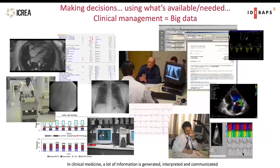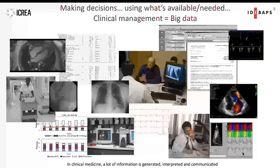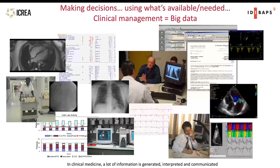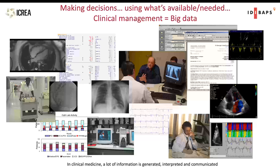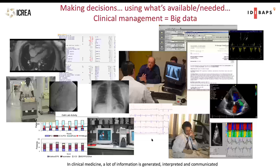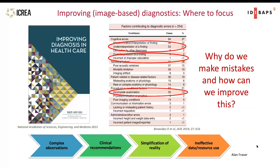Clinical decisions are not only based on one type of image or one type of information. What we need to do in clinical practice is really integrate information: the anamnesis and talking to the patient, lab information, ECGs, different types of images. It's only with the integration of all this information that we can make proper decisions in real clinical practice.